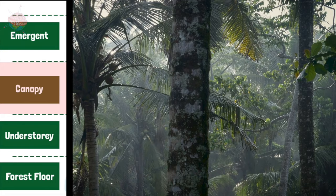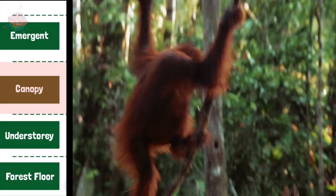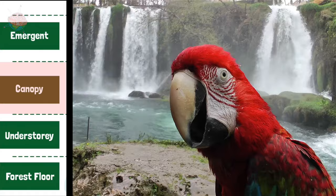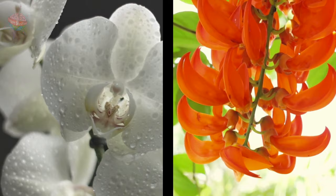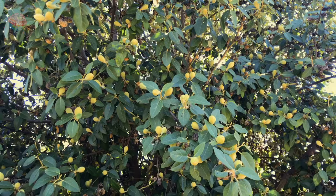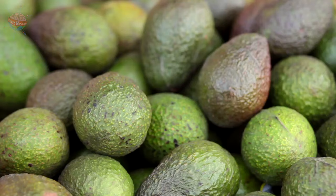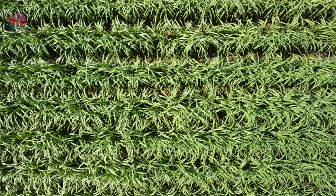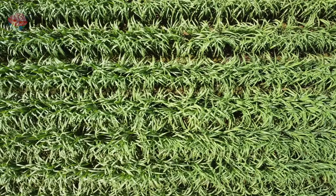The canopy layer is home to 90% of the plants and animals found in the rainforest, including orangutans, gorillas, jaguars, parrots, and elephants. Tropical rainforests are also home to colorful orchids and bromeliads. Yams, papayas, bananas, mangoes, avocados, chocolate, coffee, and sugarcane all grow well in tropical climates.